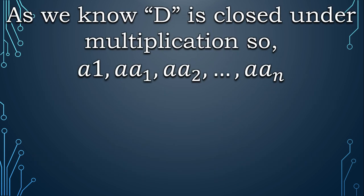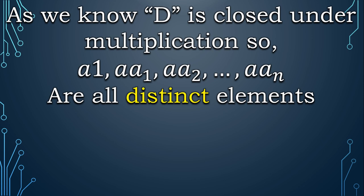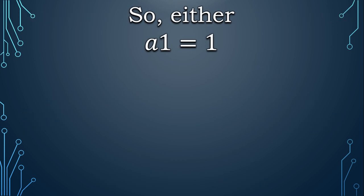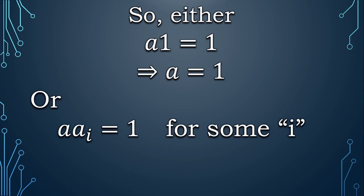One other thing that we already know is that D is closed with respect to multiplication. So it means that a·1, a·a₁, a·a₂, up to a·aₙ are all distinct elements. But also these are the same elements of D that we considered in the beginning of the proof in some order. So we conclude that either a·1 = 1, which implies a = 1 by the way, or a·aᵢ = 1 where aᵢ is any random element of D.